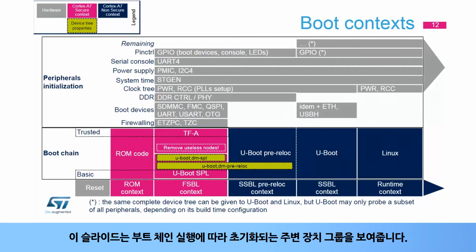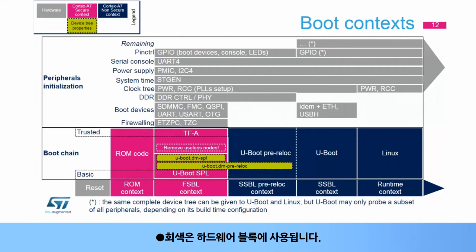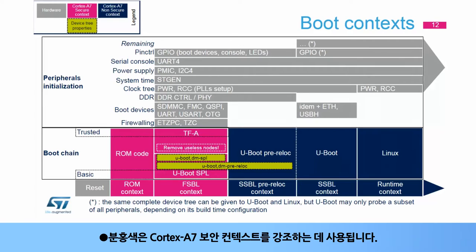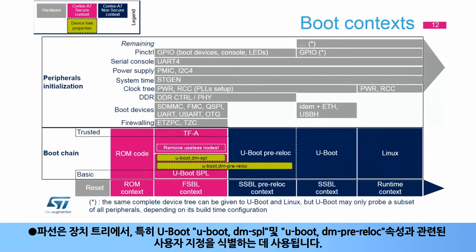This slide shows which group of peripherals are initialized all along the boot chain execution. The legend: gray color is used for hardware blocks; pink color highlights Cortex-A7 secure context; dark blue highlights Cortex-A7 non-secure context; and dash lines identify customizations on the device tree, especially with regard to U-Boot DM SPL and U-Boot DM pre-reloc properties.